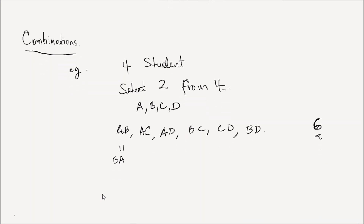The notation we use for combinations is N choose K — this is if we would like to select K objects from a pool of N objects without regard to order. This is also written as NCK, which is given by N factorial divided by K factorial times N minus K factorial.